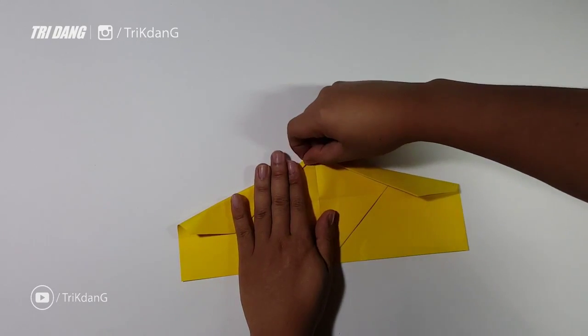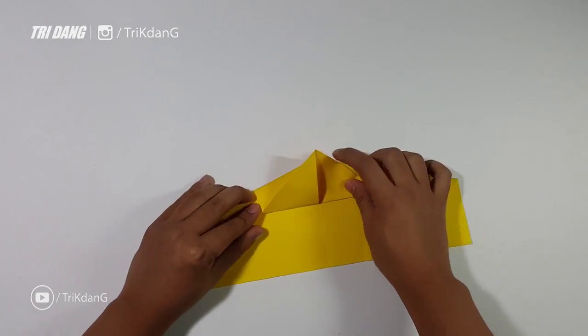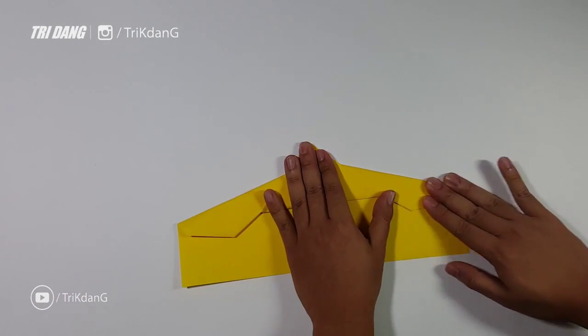After you finish both sides of the paper, you can fold this triangle shape up again. This is very easy. We almost finished the plane.